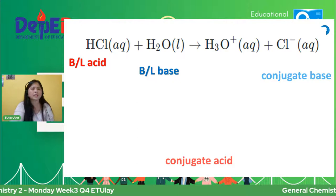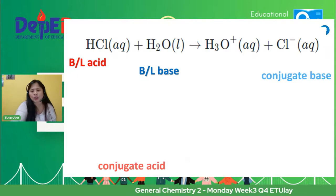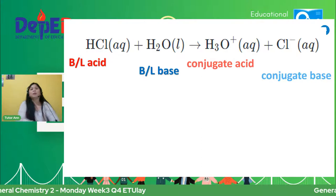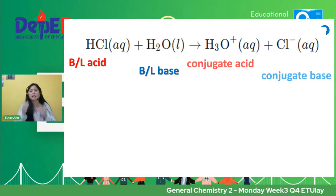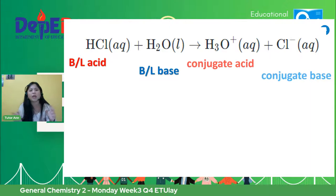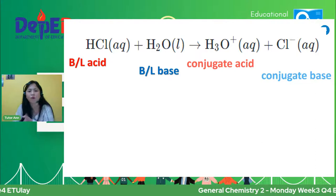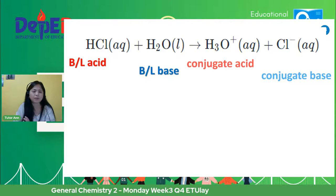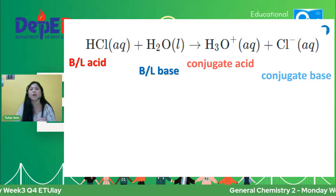Definitely ang kanyang conjugate base ay yung Cl — yung nabawasan na ng proton. And the Bronsted-Lowry base will be the water. And our conjugate acid of that is H3O. Tandaan, ang conjugate acid is the substance formed after it accepted proton. Pag nagsagot na kayo ng maraming ganyan sa worksheets, matatandaan nyo na yung Bronsted-Lowry acid, yung Bronsted-Lowry base definition.